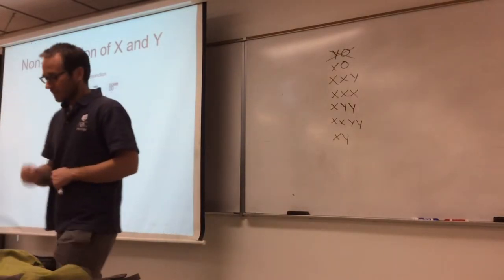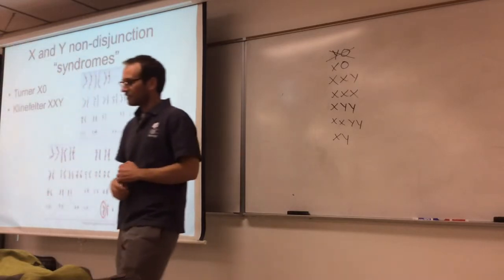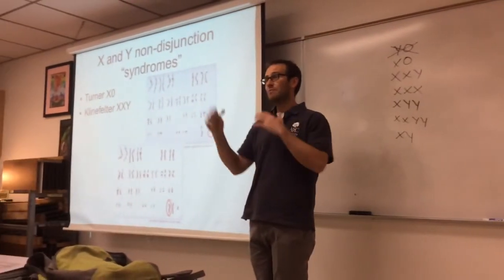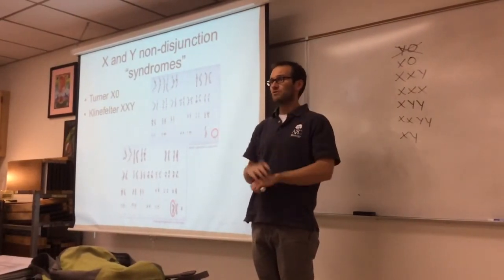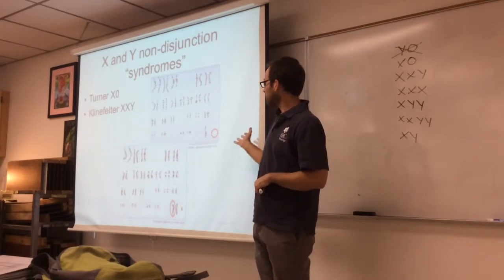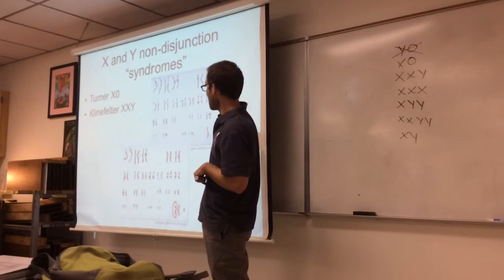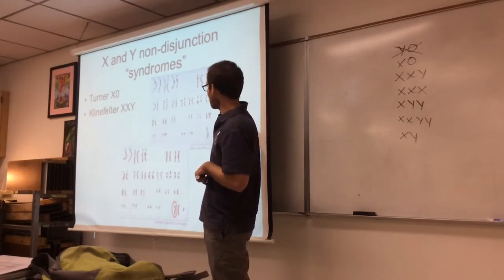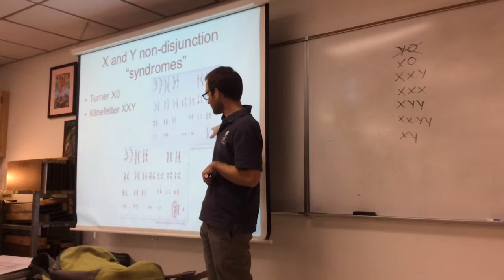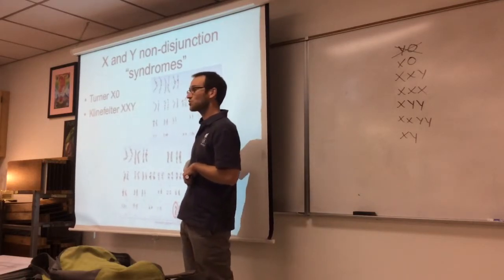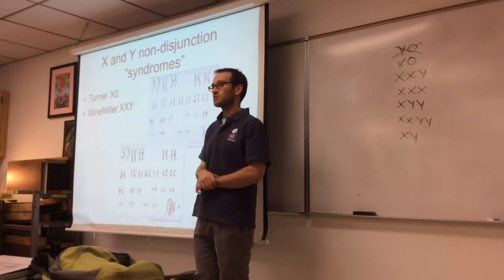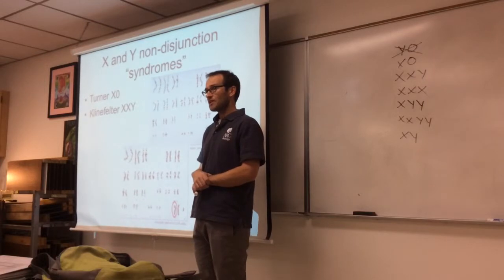On your lecture notes, I gave you a table of some of the syndromes that result from these. I just put up here an individual who is XO, and this is what the spread of chromosomes from them would look like. And an individual who is XXY, and what the spread of chromosomes would look like from them.